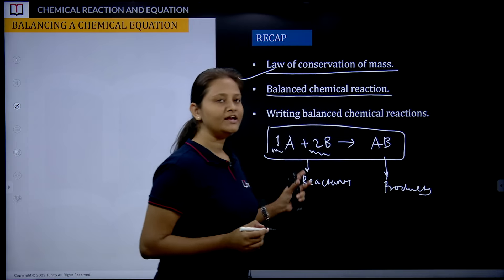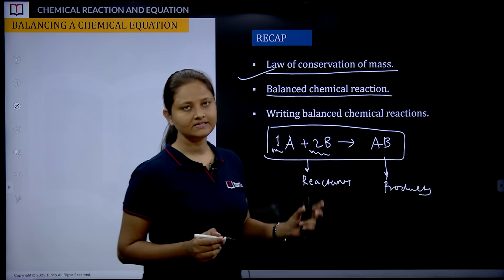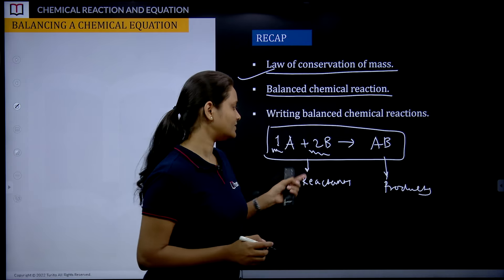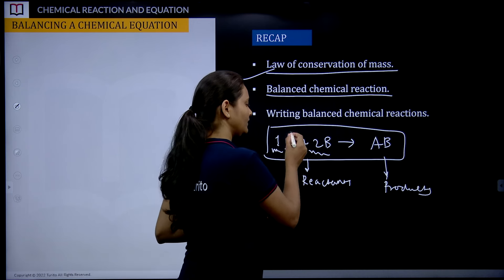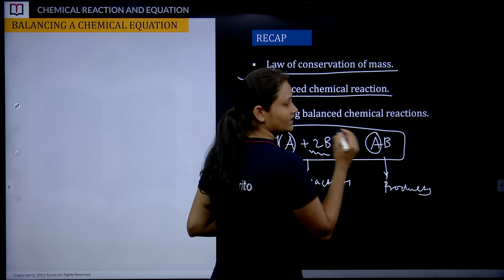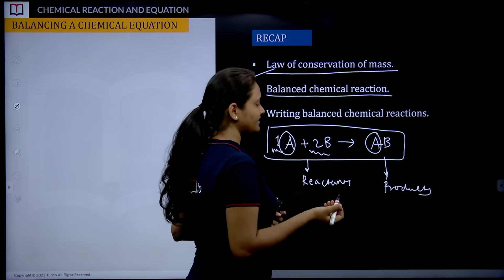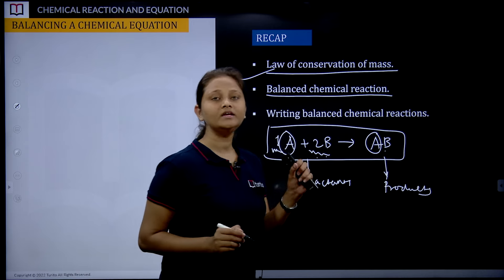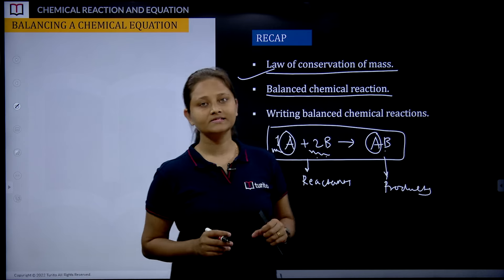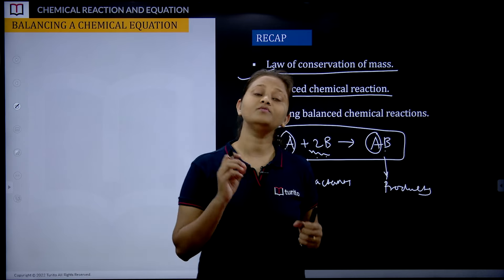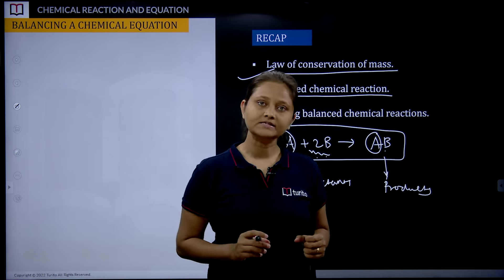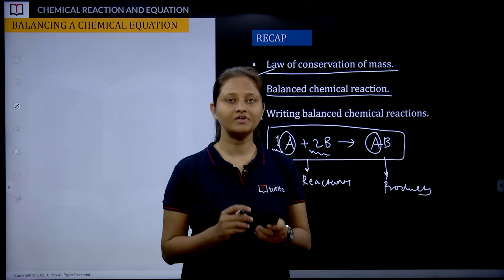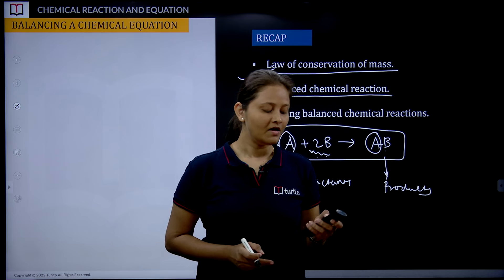We need to balance this chemical reaction — it is not balanced as written. Here, only one A is present, but there are two B and only one B on the other side. So we needed to balance this chemical reaction, and we have thoroughly learned about balancing of chemical reactions.